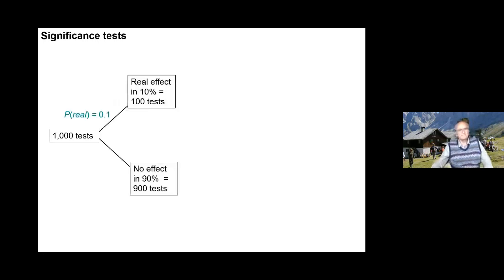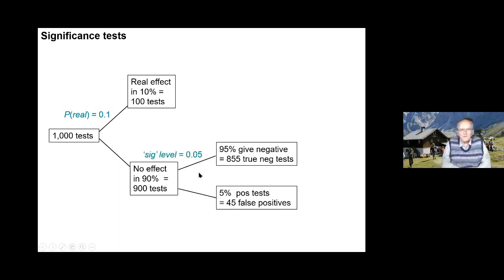Suppose we do 1,000 tests, and in 10% of them there's a real effect, and in 90% of them there is no effect. If the significance level, so called, is 0.05, then we get 5% false positive tests, which is 45 false positives.